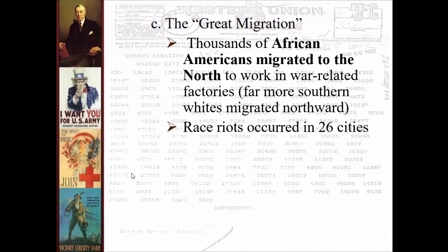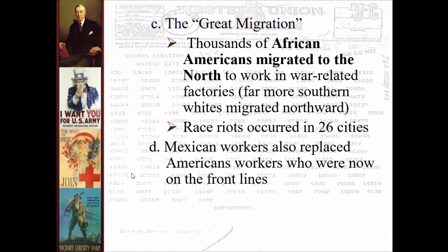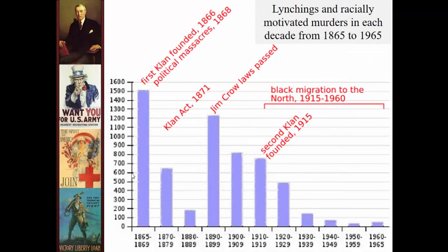The Great Migration led to massive movement of African Americans to the North. As a result, things like lynchings and other racial murders started to really decrease in the South. However, the result in the North was race riots — not only during but especially after the war — as whites and African Americans sometimes fought over access to low-paying factory jobs. Mexican workers also replaced American workers, especially in agriculture and some service jobs, particularly in the Southwest.